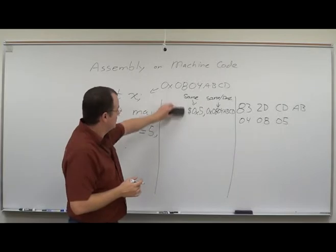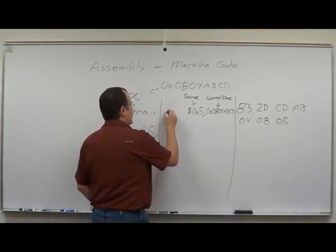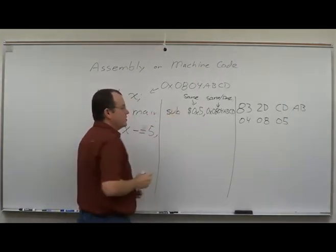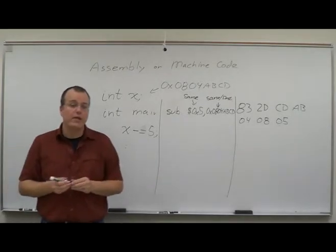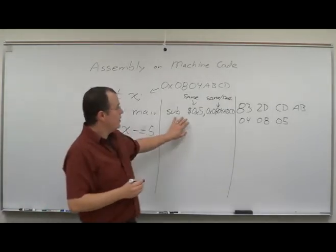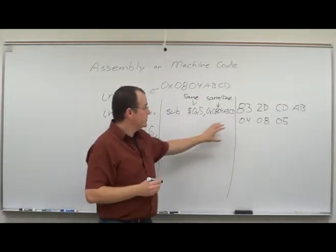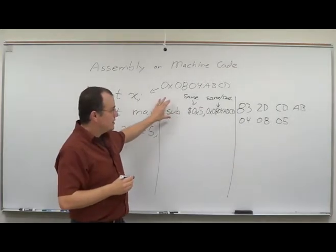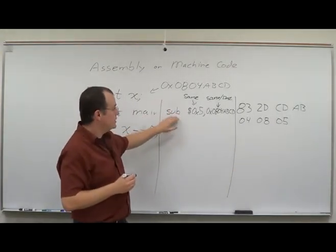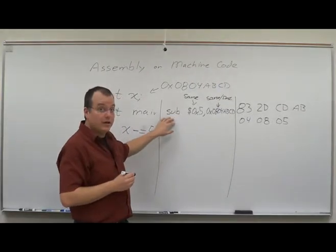In the assembly we simply change that to a subtract. And that's why we have assembly. It's a one-to-one mapping from the machine instructions to one of our assembly instructions. And the assembly instructions actually kind of tell us what's going on. This is a subtract.